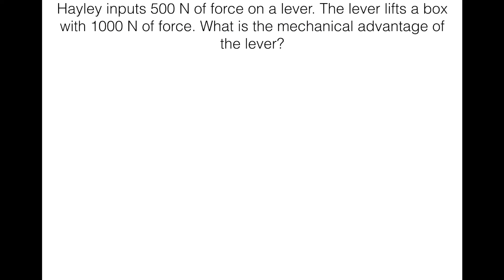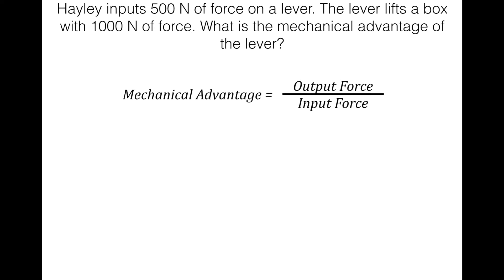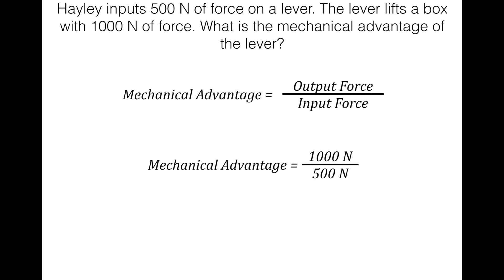Let's look at a sample problem. Haley has a lever — she inputs 500 newtons of force on one end, and on the other end the lever lifts a box with 1000 newtons of force. What is the mechanical advantage? We use the formula: mechanical advantage equals output divided by input. Output force is 1000 newtons, input force is 500 newtons. We divide the two and get a mechanical advantage of two. There are no units — it just tells you how many times the output is compared to the input.